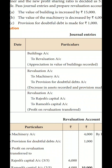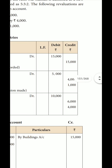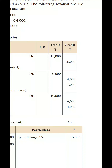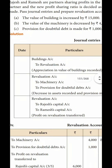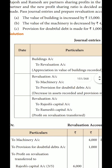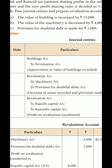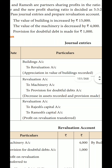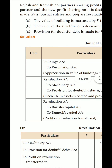Appreciation in value means building is recorded as increased — appreciation is the opposite of depreciation. For the second point, the value of machinery is decreased by 4,000. When an asset value decreases, it is a loss. The debit and credit are reversed compared to appreciation.